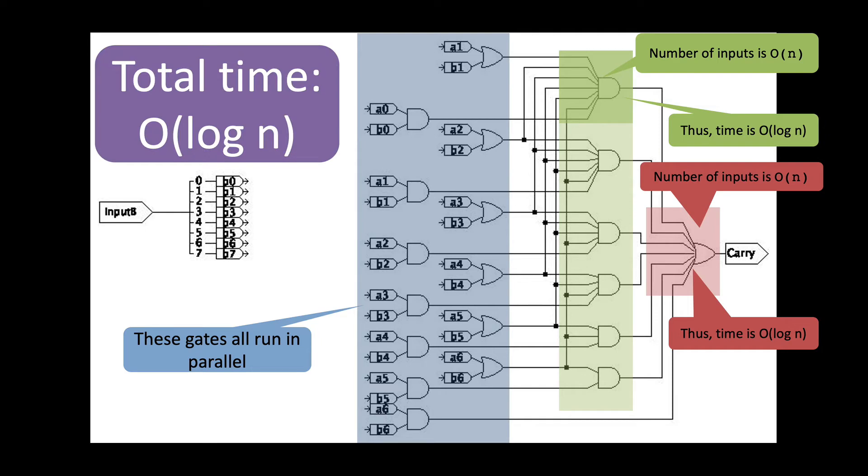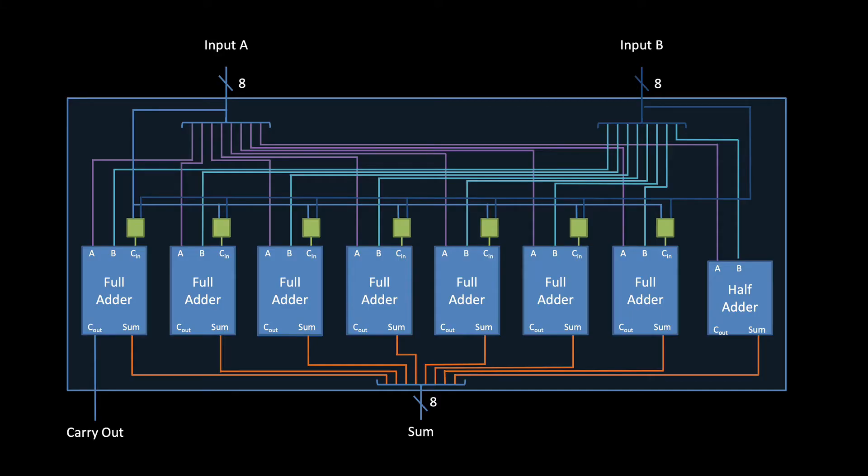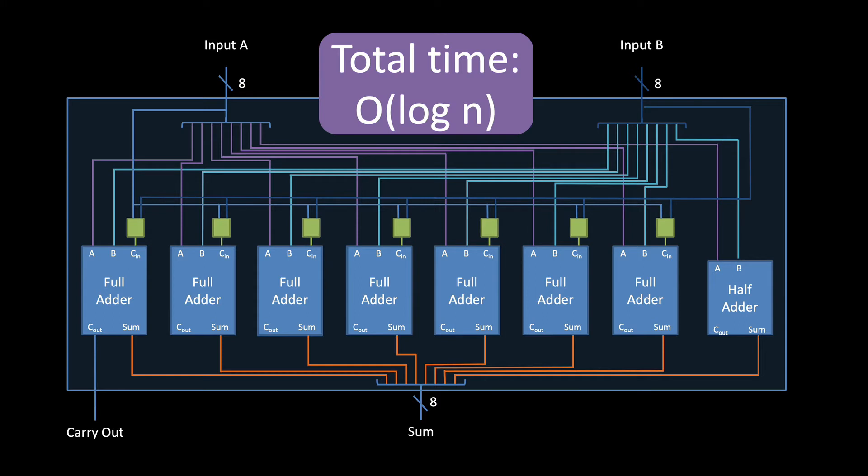Now, because this is the slowest piece of all the components that run in parallel, when you put this together, you get an overall propagation delay that grows logarithmically. Now, as you know, you almost never get something for nothing. So, do you have any guesses about what we give up in order to get the faster speed in this adder?